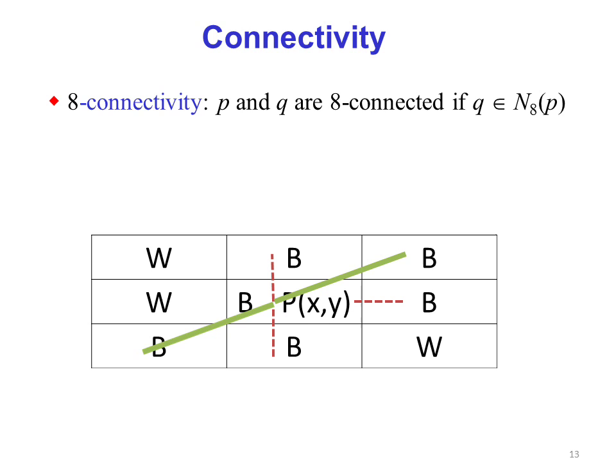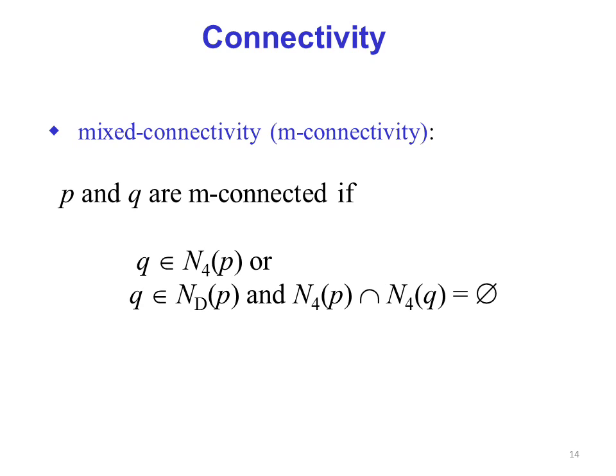Mixed connectivity: if p and q are m-connected, then q is in N₄(p) or q is in Nᴅ(p), and the set intersection of N₄(p) and N₄(q) is an empty set.